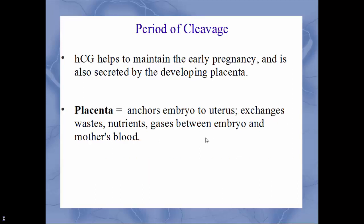HCG will help maintain a very early pregnancy because you need a lot of things going on at once to nurture this growing zygote. HCG is also secreted by the developing placenta. The placenta actually anchors the embryo to the uterus and is where the exchange of waste, nutrients, and gases between the embryo and the mother's blood occur. The placenta is not the same as the umbilical cord — the umbilical cord attaches to the placenta. They are two different things.